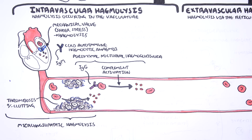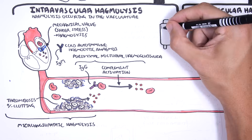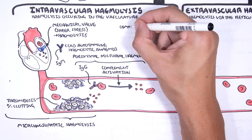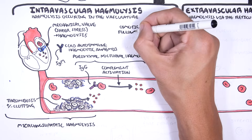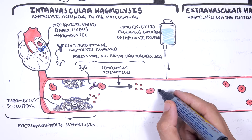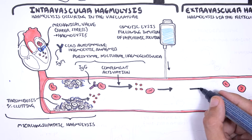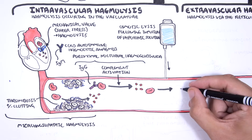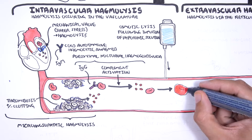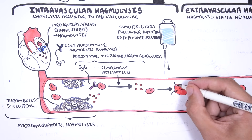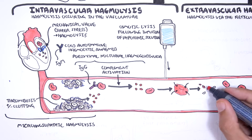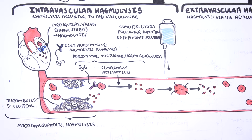Another example of intravascular hemolysis is osmotic lysis following infusion of hypotonic IV solutions. When a hypotonic solution is given, water moves toward areas of higher solute concentration — in this case, the red blood cells. This causes red blood cells to take in water, swell, and burst, leading to intravascular hemolysis.